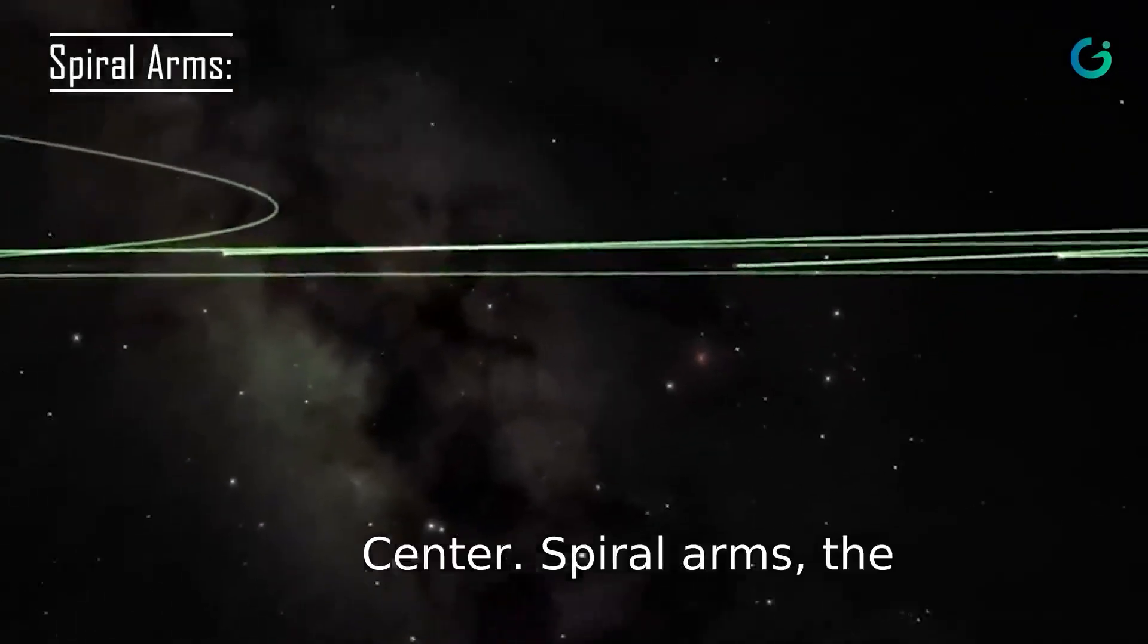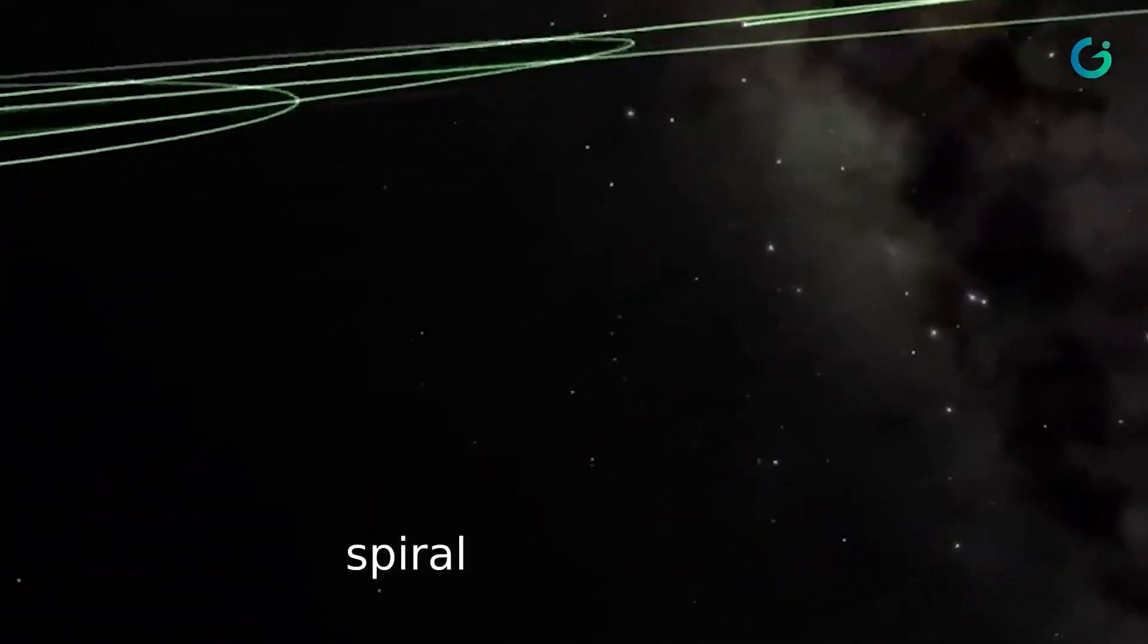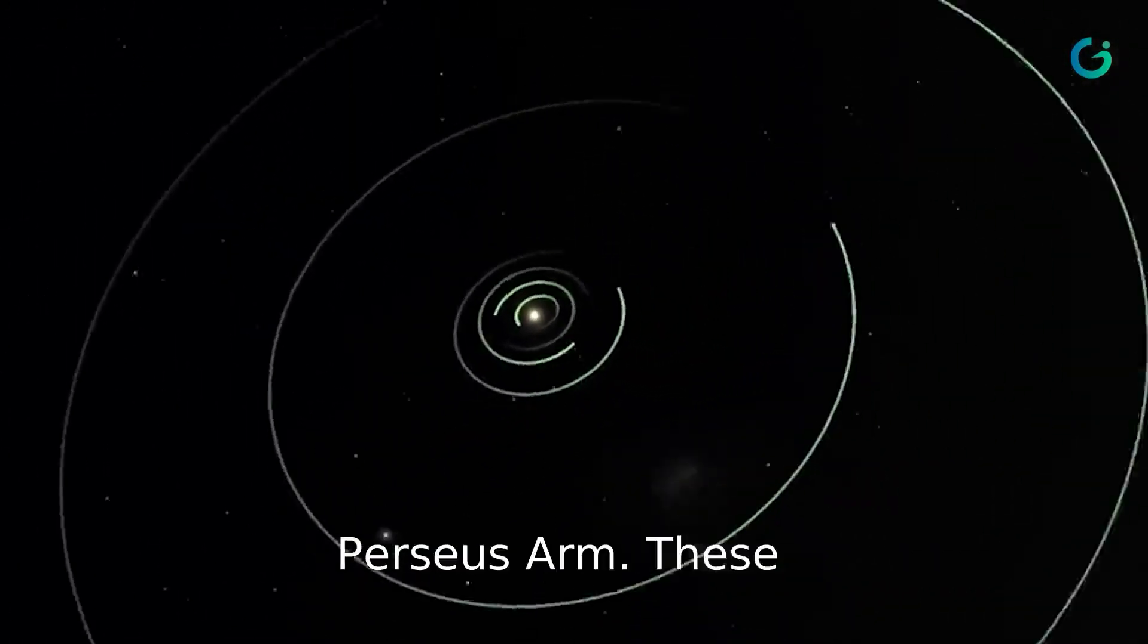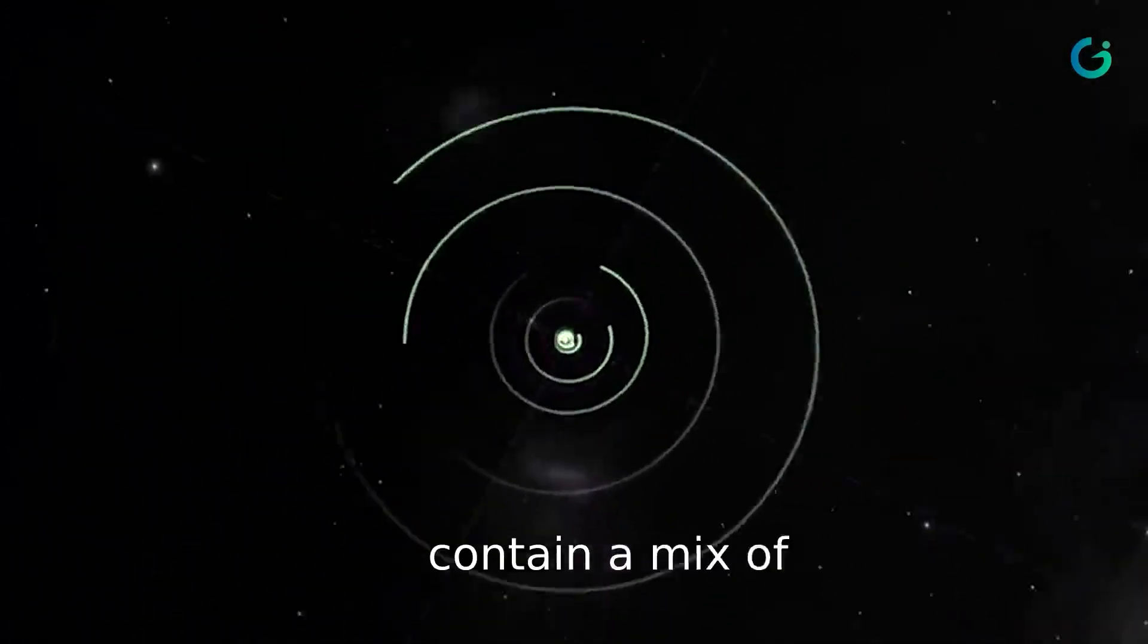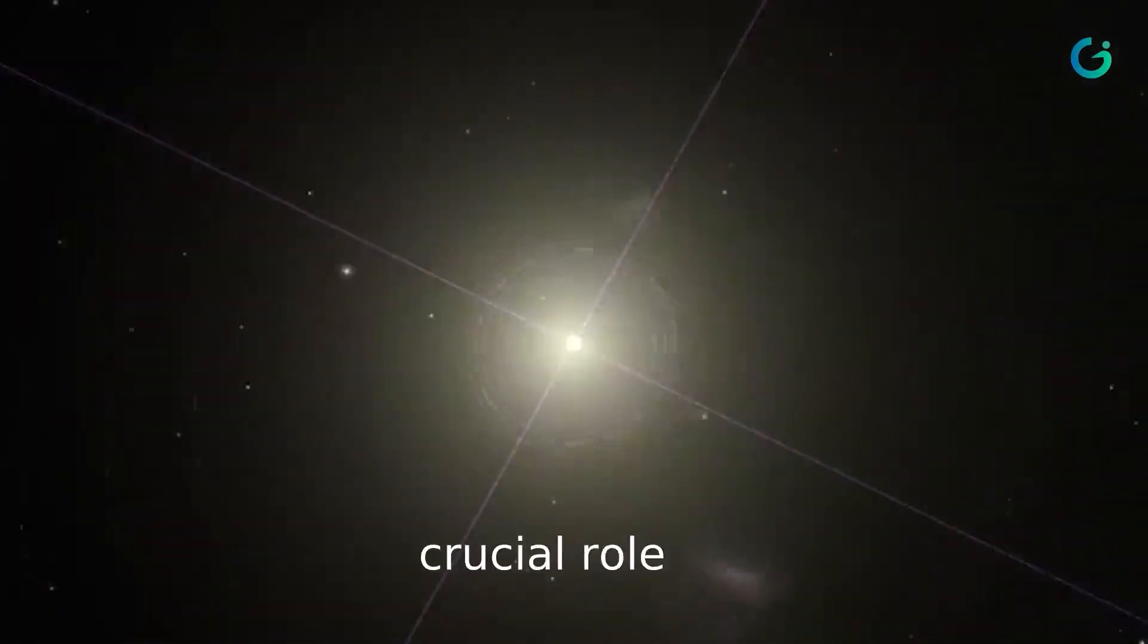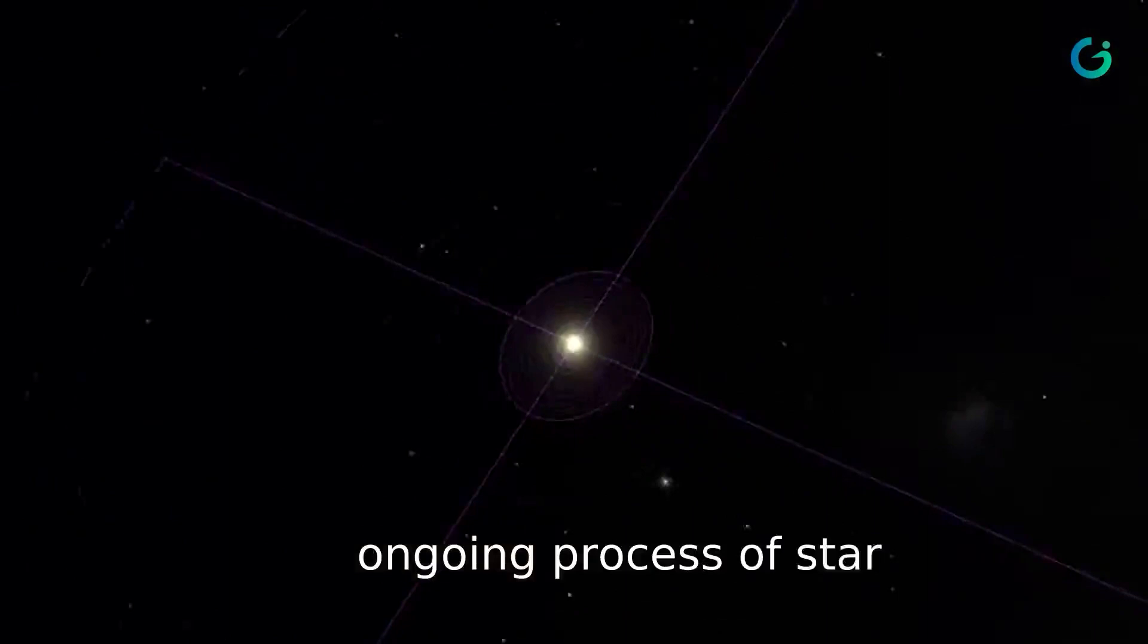The Milky Way has several spiral arms, including the Sagittarius Arm and the Perseus Arm. These arms contain a mix of young and old stars, and they play a crucial role in the ongoing process of star formation.